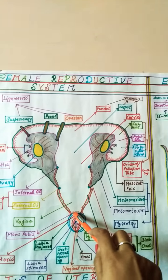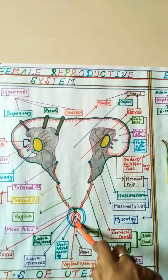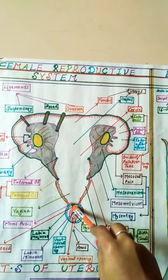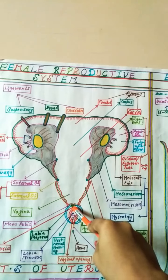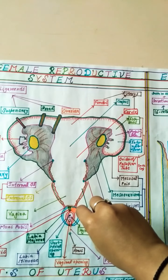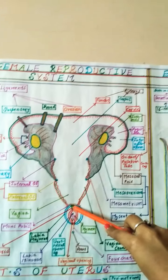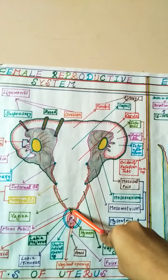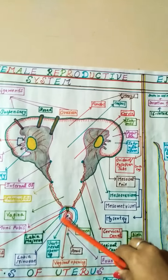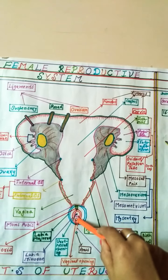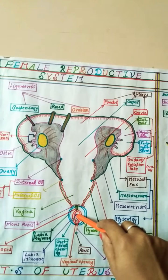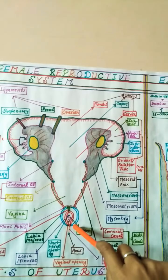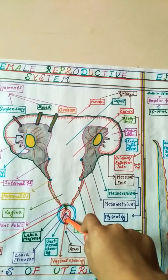At the upper portion of the labia minora there is a small erectile tissue called the clitoris. It is a very sensitive structure because nerve endings for touch and pressure are concentrated here.